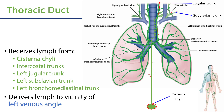This lymph will be delivered into the vicinity of the left venous angle. Recall that the venous angle is where the internal jugular vein meets the subclavian vein. Thus the thoracic duct is going to drain lymph from the entirety of the body, with the exception of the right upper limb, the right thorax, and the right head and neck. That lymph will be drained by the right lymphatic duct.